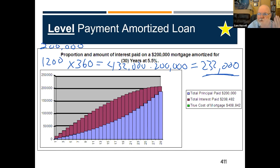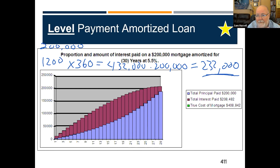So you'd take your monthly payments, multiply it by the length of your loan, subtract what you originally borrowed — that's the principal — and the rest is interest.